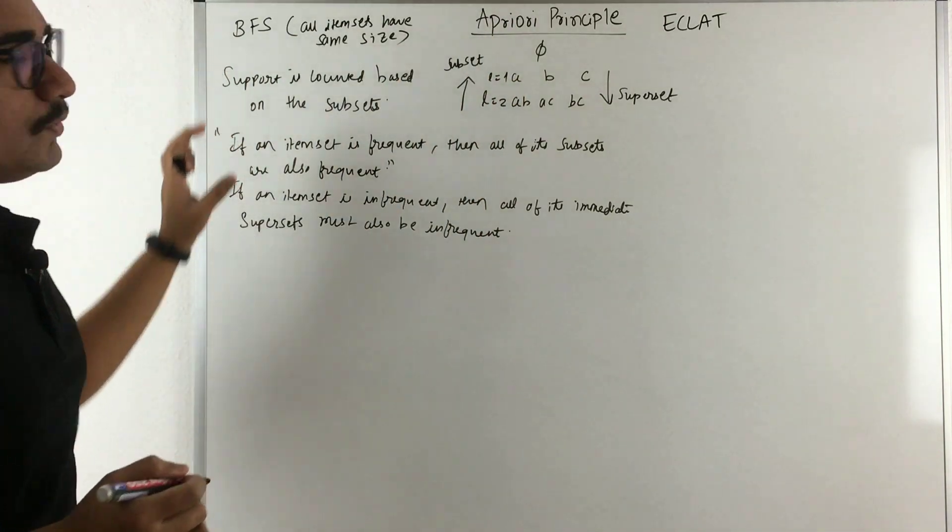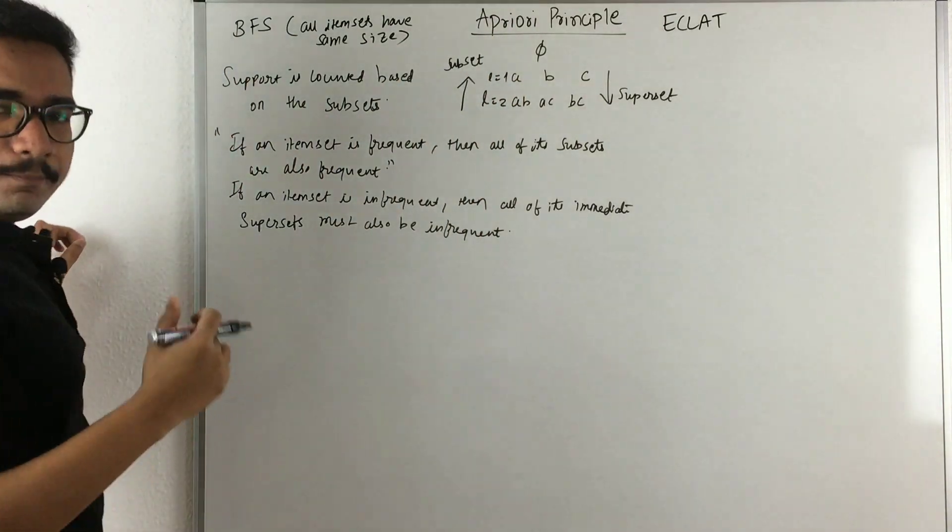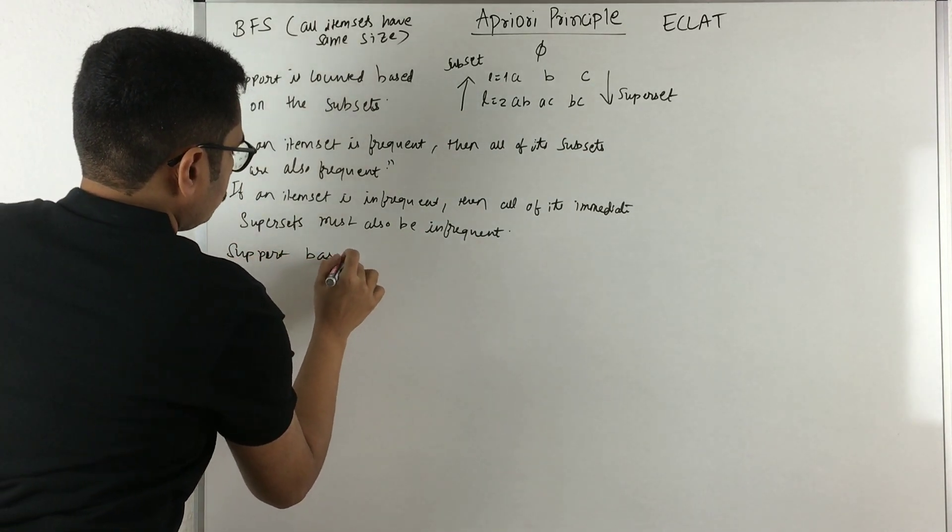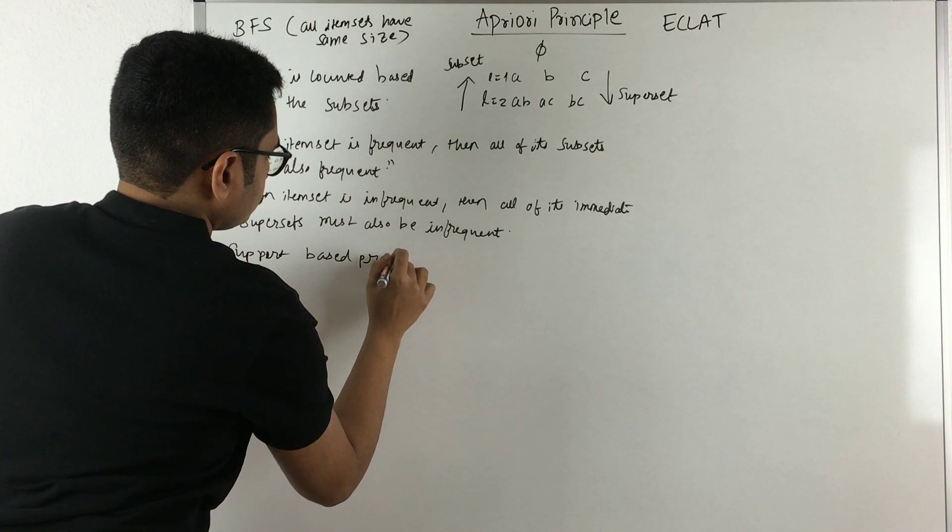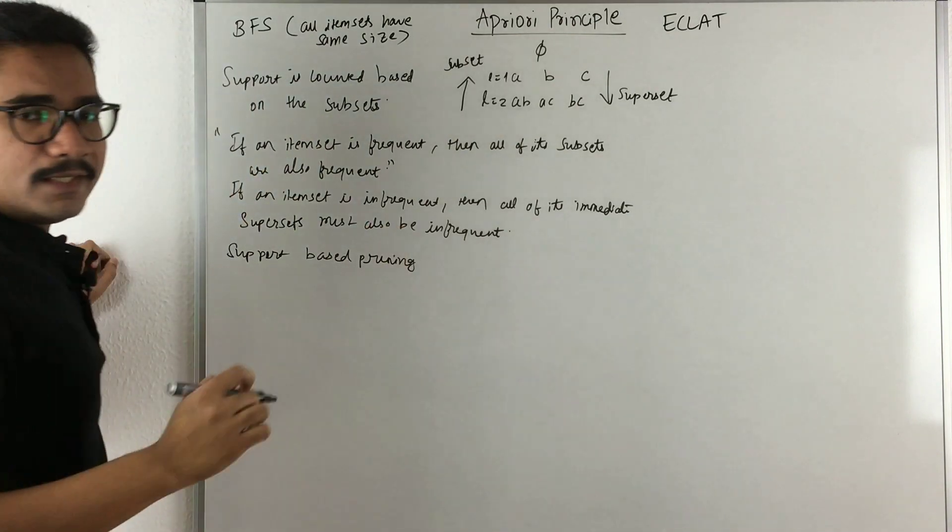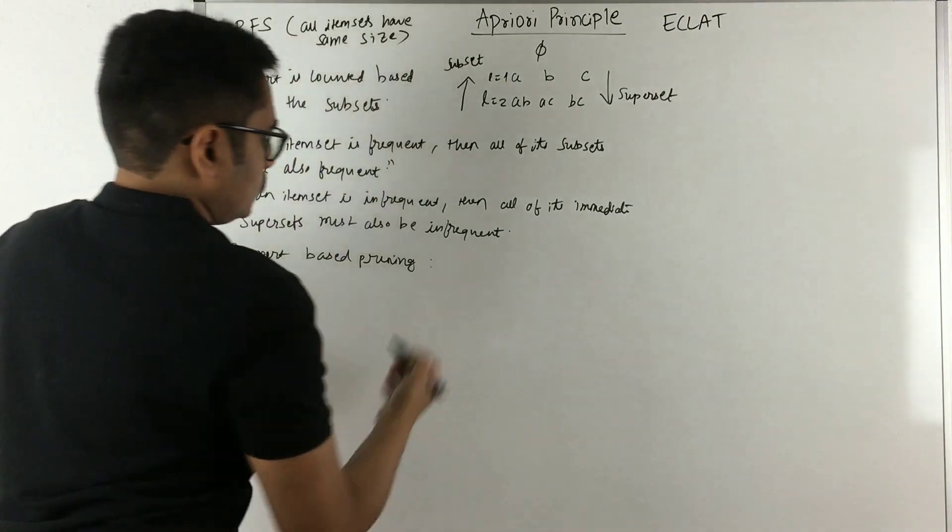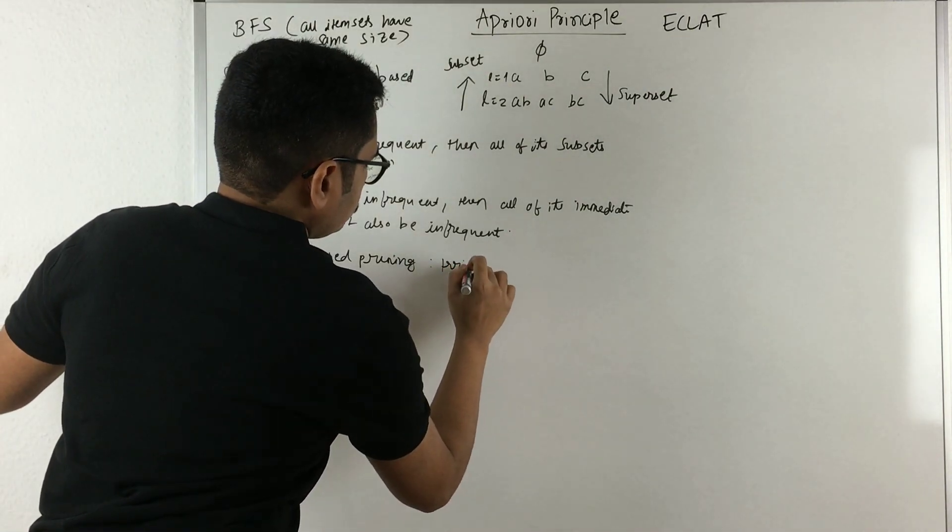Thus, you have one main pruning principle that is called support-based pruning. The advantage it carries is it will help in trimming down your lattice in an exponential way.